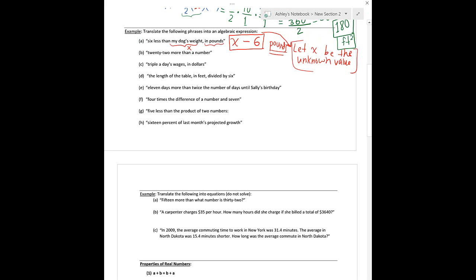The next one says: twenty-two more than a number. The thing I don't know is that number, so that's x. Twenty-two more — that sounds like adding. If I had twenty-two more dollars than you, I'd have whatever you have plus twenty-two, so it's x plus twenty-two. The good thing about addition is that x plus twenty-two or twenty-two plus x would be the same thing. But subtraction is very particular — if you switch those, six minus x is a totally different number.